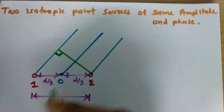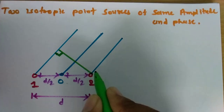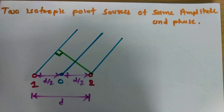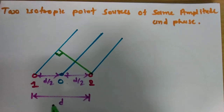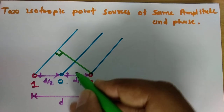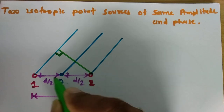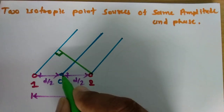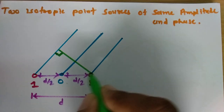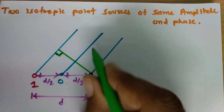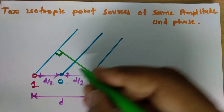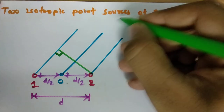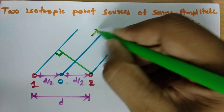Here one can clearly see there are two point sources — point source 1 and point source 2 — separated by distance d. The reference point origin is placed exactly at the center between source 1 and source 2, and the electric field is in this direction.